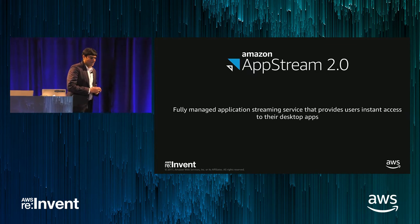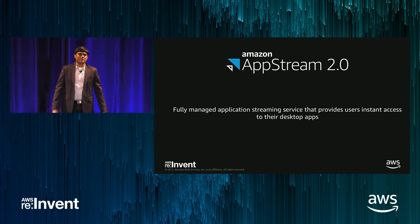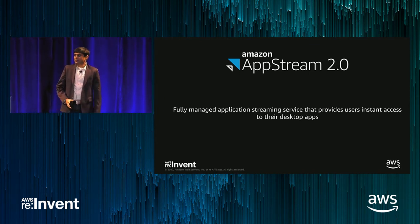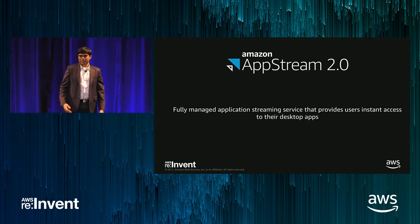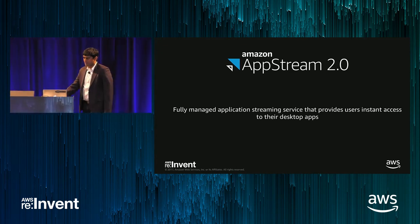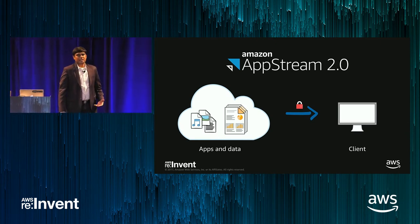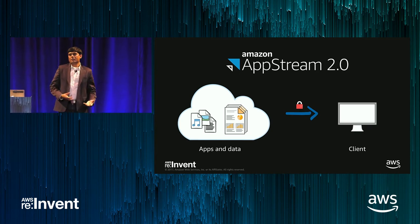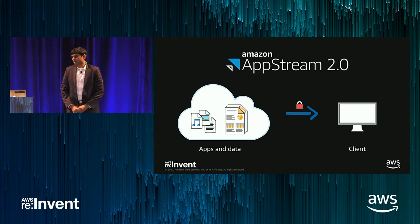AppStream is a fully managed service that delivers Windows applications to any device with a browser, so users can connect and use multiple Windows applications all through the browser. These could be 3D applications or business applications. The key advantage with AppStream is the apps and data are going to be on AWS, and the user only interacts with pixels that are coming out of the apps on their local device.